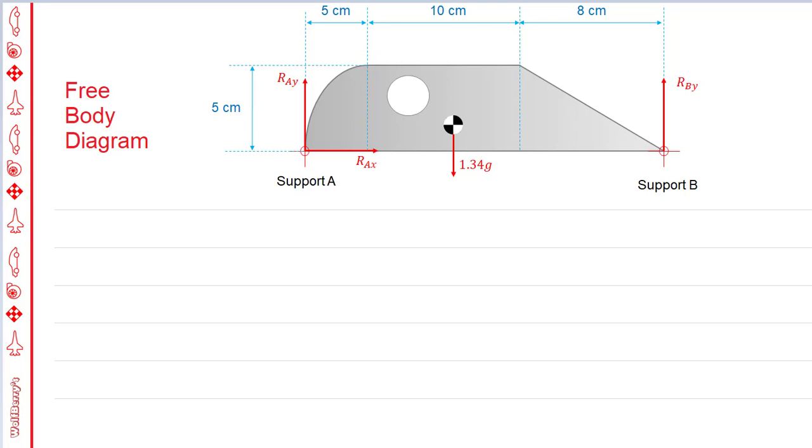The final step in our analysis is to find the reaction forces at A and the reaction forces at B. I've drawn here the free body diagram of this system. First of all, the weight acts at the center of gravity, which we just found.